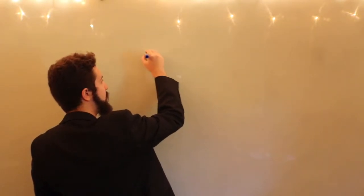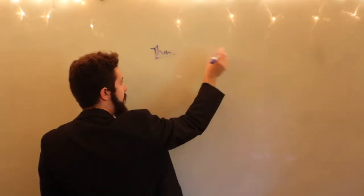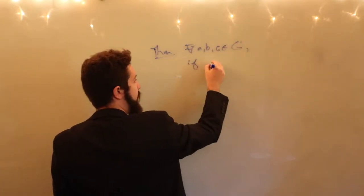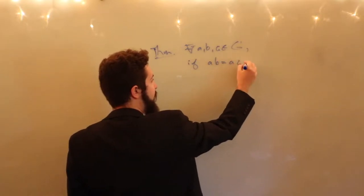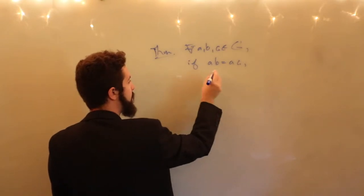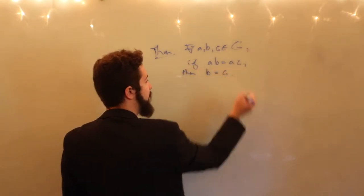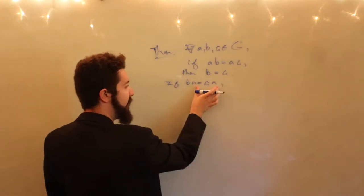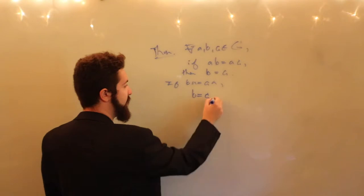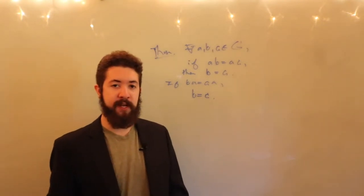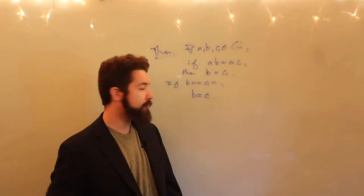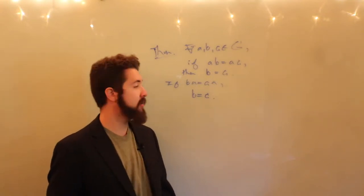The first important property we want to consider is that of cancellation. We want to show that for all A, B, and C in a group G, if AB equals AC, then we can cancel on the left so that B equals C. Likewise, if BA equals CA, we want right cancellation so that B equals C. This may seem elementary, but we're not talking about just real numbers here — we have to prove that this holds for any group.